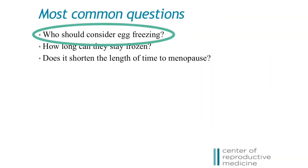When is the best time to freeze eggs? There isn't a clear-cut answer, but generally speaking, the younger the woman is, the better her chances at retrieving a larger number of better quality eggs with fewer IVF cycles. The disadvantage, however, is that she may not end up needing to use these eggs. Conversely, the older the woman is, the more likely she is to undergo more IVF cycles to freeze more eggs of lower quality to achieve comparable pregnancy rates. Therefore, if a woman is considering egg freezing, a good time to start thinking about it is between these two extremes — typically between the age of 30 to 37 years old.